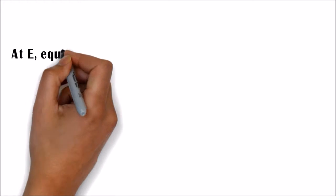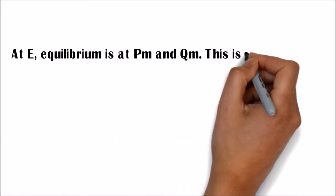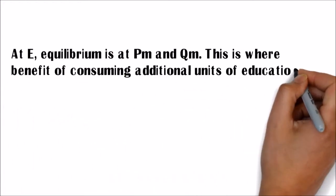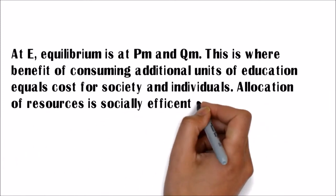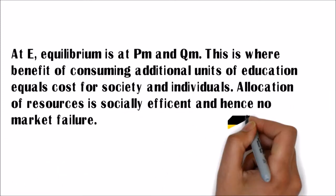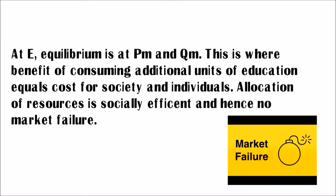At E, equilibrium is at PM and QM. This is where the benefit of consuming additional units of education equals cost for society and individuals. Allocation of resources is socially efficient and hence there is no market failure.